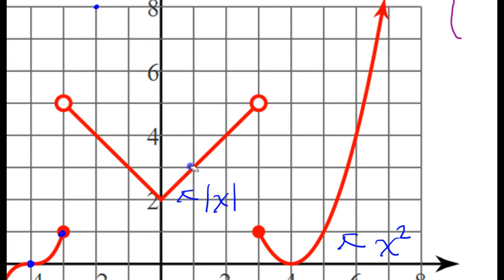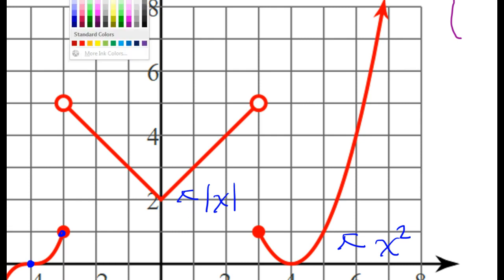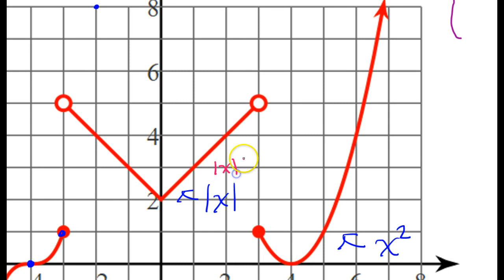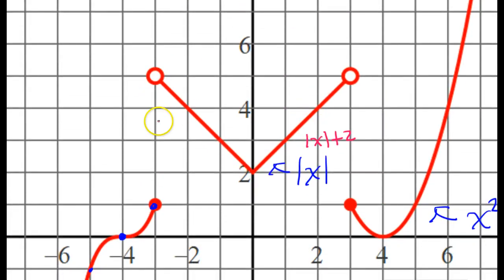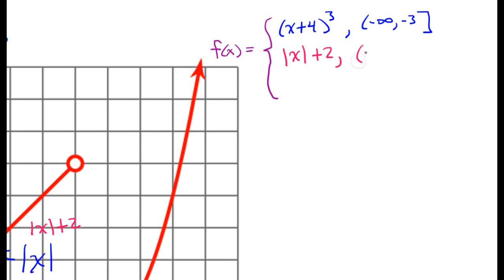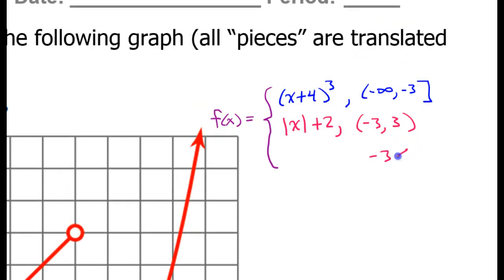Now let's move on to the absolute value. I see the slope hasn't changed — it's supposed to go up 1 over 1 — but it has been moved up 2. So the equation for this function would be absolute value of x plus 2. The domain is from negative 3 to positive 3. See the open circles? So I'm going to put negative 3 to positive 3 with parentheses to show that it's not included. As an inequality, that would be negative 3 less than x less than 3.